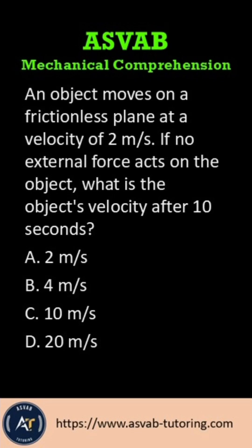Here's a practice question on Mechanical Comprehension for the ASVAB test. An object moves on a frictionless plane at a velocity of 2 meters per second. If no external force acts on the object, what is the object's velocity after 10 seconds?